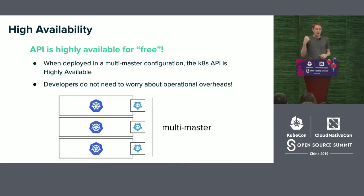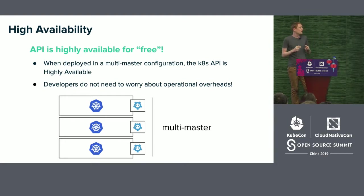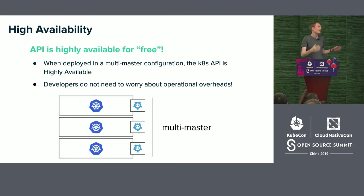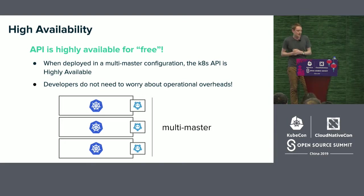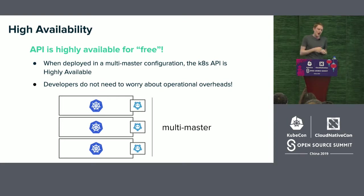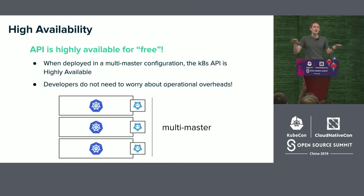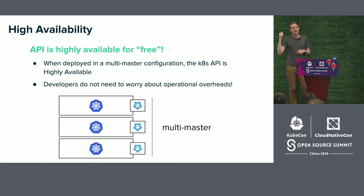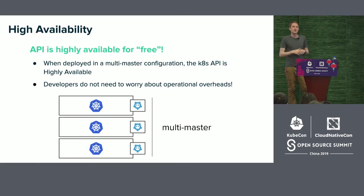Loosely related is high availability. When deployed in a multi-master configuration, the Kubernetes API is highly available — essentially for free. This is really enticing because it means I don't have to worry about the availability of my API, freeing time to focus on writing services and shipping features. There's also the question of running controllers in HA. In this level-based system, it's actually okay if your controller goes down for some period of time — when it comes back online, it reads desired state, triggers its reconcile function, and away you go.